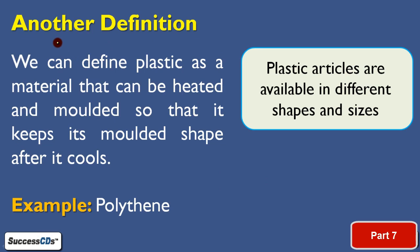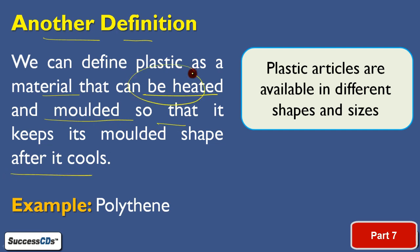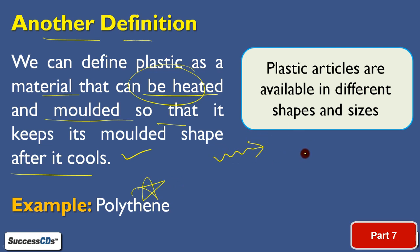There is another definition for plastic: it is a material that you can heat and mold into different shapes. After heating, you place it into different shapes — whatever shape you want, you can mold it. After cooling, it retains that molded shape. Polythene is an example. Plastic articles are available in different shapes and sizes.